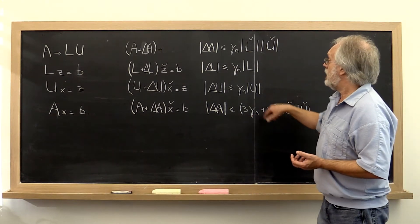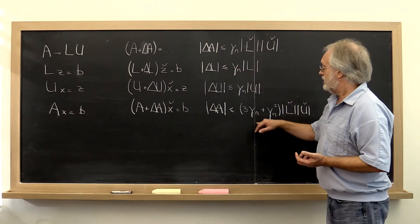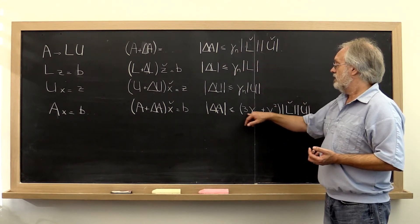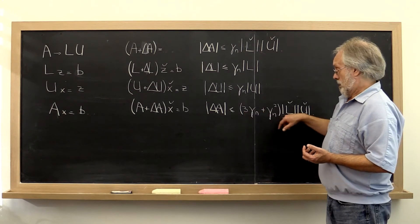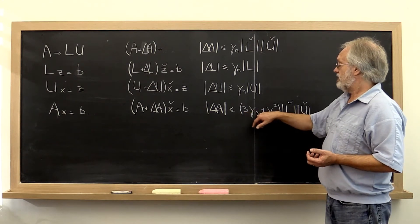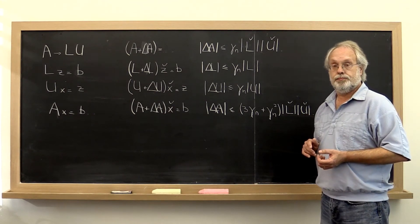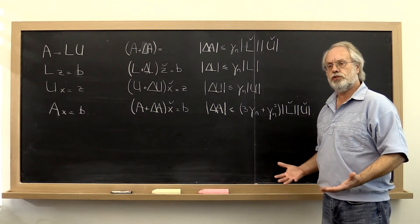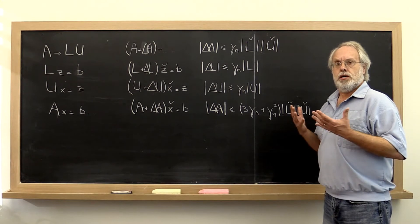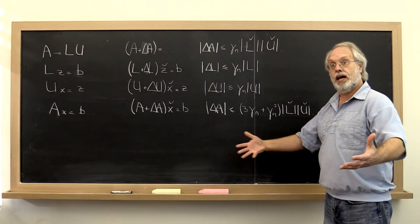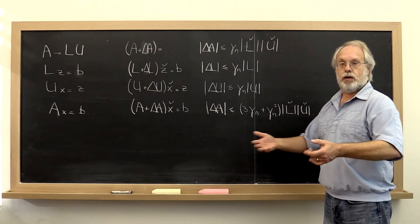And that constant now is not gamma n, but it is amplified slightly through these two steps right here. And you can show that that constant is now three times gamma n plus gamma n squared. And again, this is a worst case situation where at each step we bound error and therefore it is the worst that might happen as things propagate.